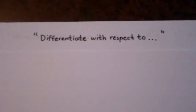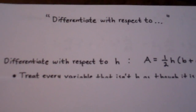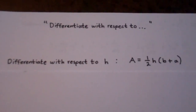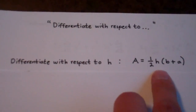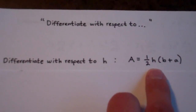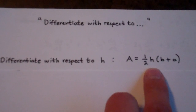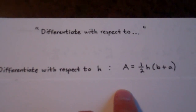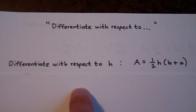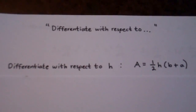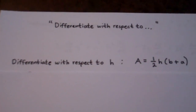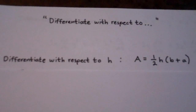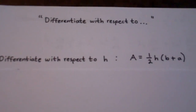So let's start with this example. You might recognize this formula right here — this is the formula for the area of a trapezoid. And suppose we would like to take this formula and differentiate with respect to h. So what does that mean, differentiate with respect to h?